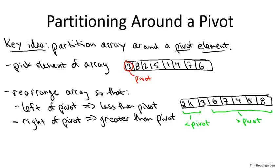Notice in the partitioning subroutine, we do not insist that we get the relative elements of order correct amongst those elements less than the pivot or amongst those elements bigger than the pivot. So in some sense, we're doing some kind of partial sorting. We're just bucketing the elements of the array into one bucket, those less than the pivot, and then a second bucket, those bigger than the pivot. And we don't care about getting right the order amongst each, within each of those two buckets.